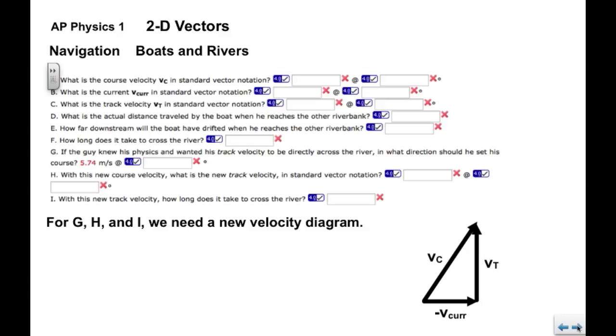Now for G, H, and I, we now have a different situation. So it suggests in G that he wanted his track velocity to be directly across the river. In what direction should he set his course? So your common sense would tell you, you're going to point the boat somewhat upstream into the current.